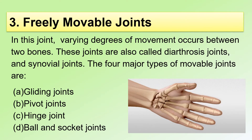Now, let's look at the freely movable joints. In this joint, varying degrees of movement occurs between two bones. These joints are also called diarthrosis joints and synovial joints. The four major types of movable joints we are going to look into in this video are gliding joints, pivot joints, hinge joints, and ball and socket joints.